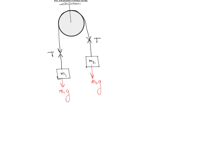We assume that if m2 is greater than m1, then m2 is going to move in the downward direction with acceleration a. Since m2 is connected to m1 by an inextensible, massless string, if m2 moves downward with acceleration a, then m1 will move upward with the same acceleration a.